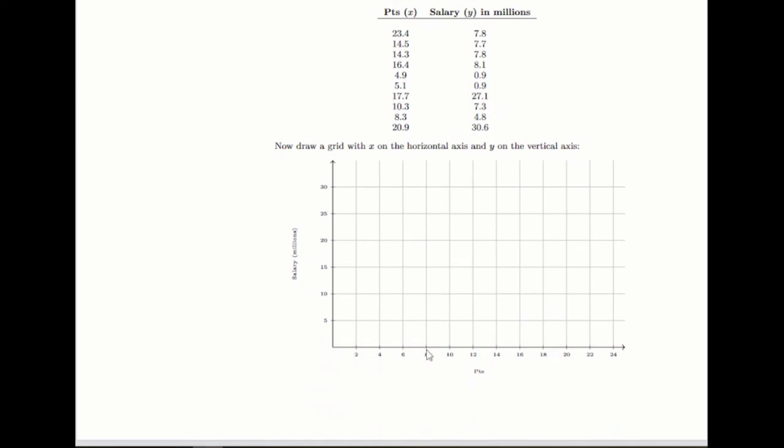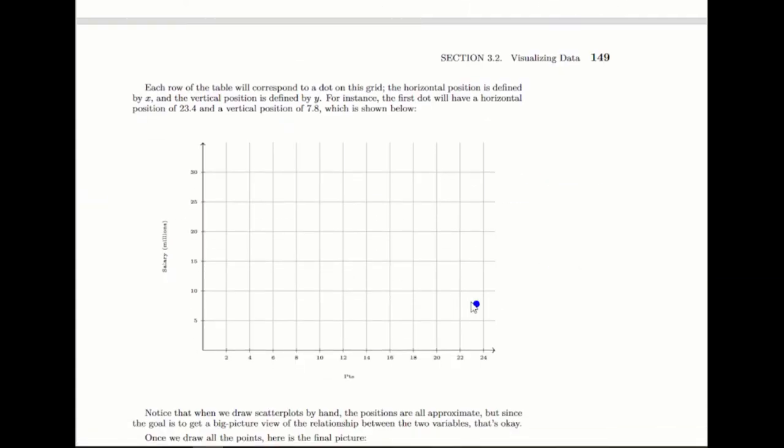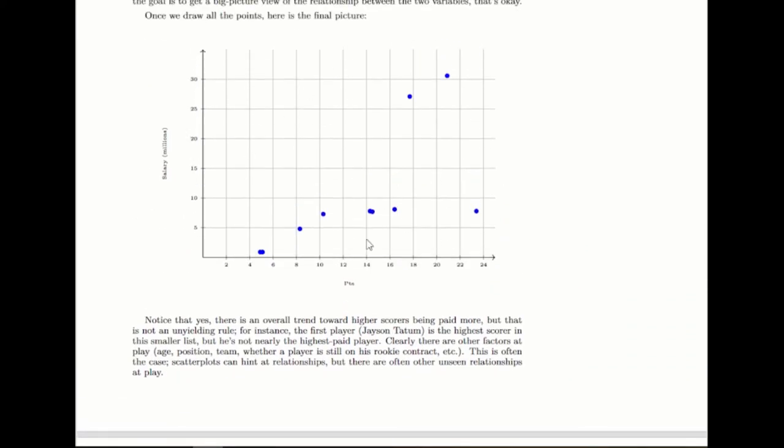You draw your grid, making sure to include the right scale to show the data points that you have, and then you start putting these points on here. This first player averaged 23 points per game and had a salary of about 8 million. On the points scale you'd go to about 23, and then on the vertical scale, the salary, you'd go up to about 8, and you'd put a dot right in that location. Then you continue doing this for all of them. The nice thing about this is it shows us there's this upward trend that as you increase the number of points per game someone scores, their salary tends to increase. There's a couple of data points that break that trend, but more or less the trend is in that direction.